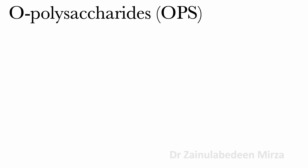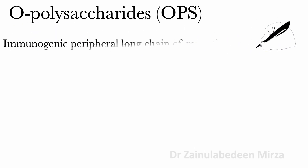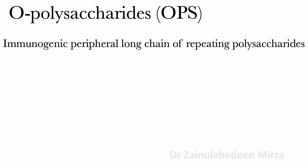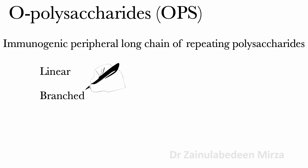The O-polysaccharide (OPS) is known as the immunogenic peripheral long chain of repeating polysaccharides. Capped (smooth) and uncapped (rough) are two forms of LPS exposed on the bacterial surface when OPS is present or absent, respectively.